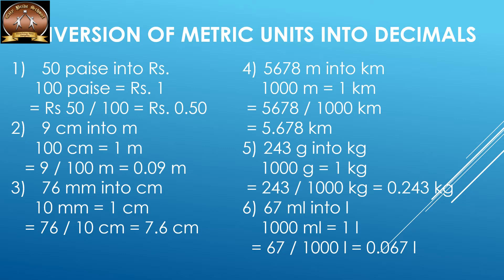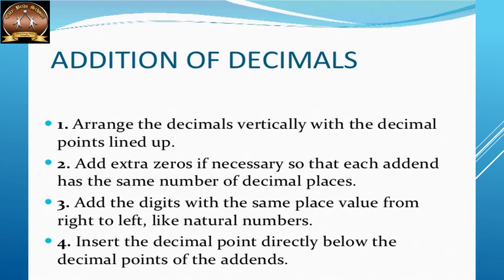So we divide by 1000 to convert into kilometers, and that's how we get 5.678 kilometers. Next, 243 grams into kilograms: the conversion is 1000 grams equal to 1 kilogram. Smaller to bigger unit, so we divide by 1000 — that gives 0.243 kilograms. Then 67 milliliters into liters: 1000 milliliters equal to 1 liter. Dividing by 1000, we get 0.067 liters.